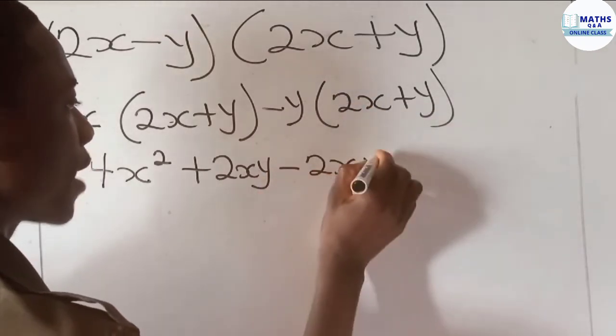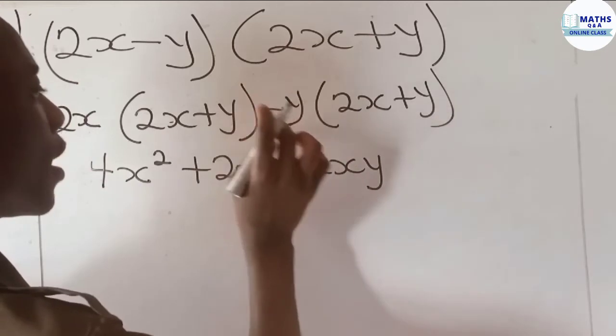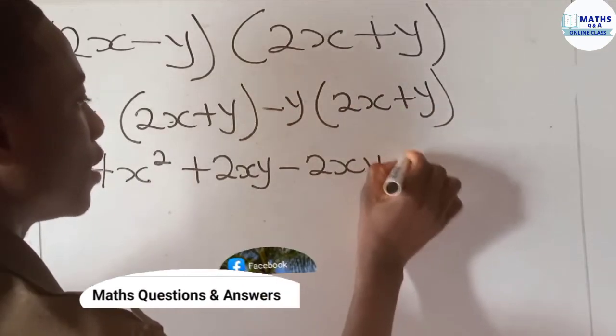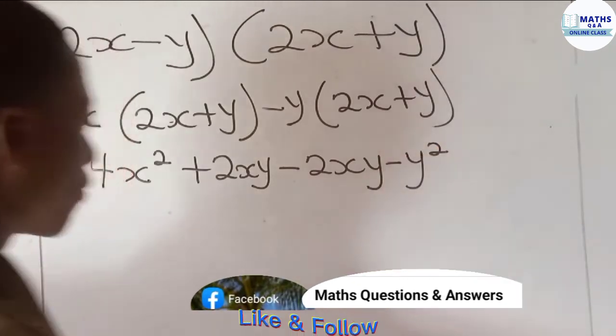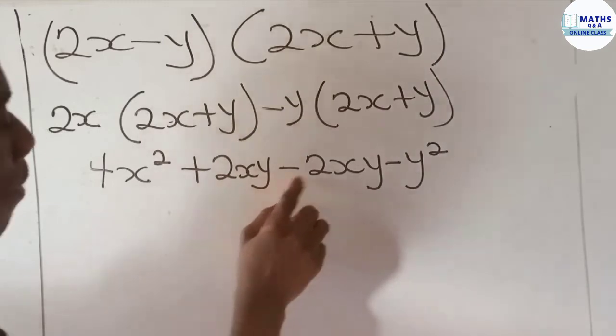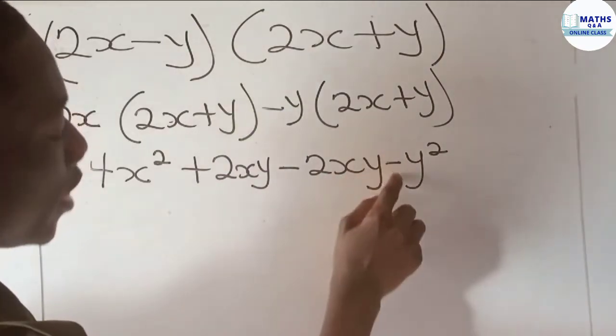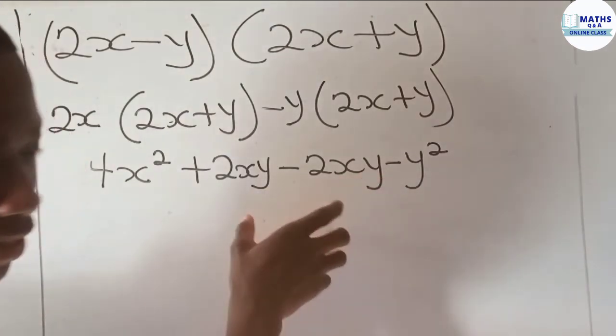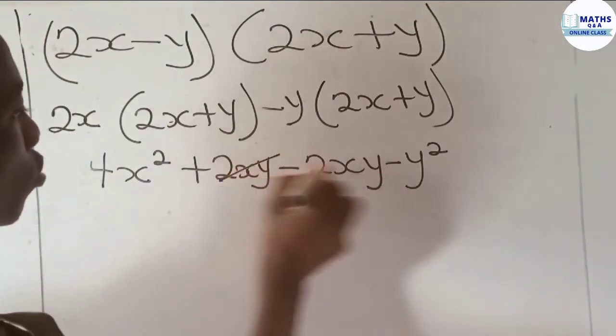We have 4x² + 2xy - 2xy - y². Now 2xy minus 2xy is 0, right? So these two will cancel out. This becomes the result when we expand and simplify.